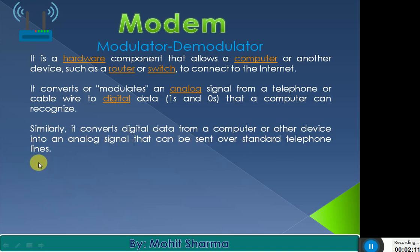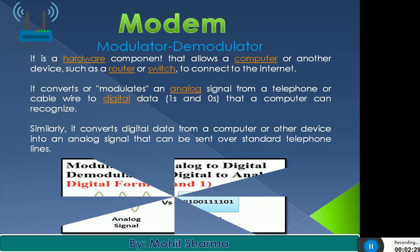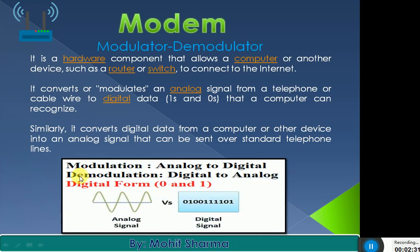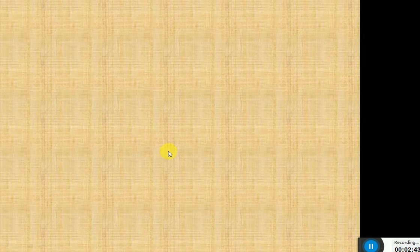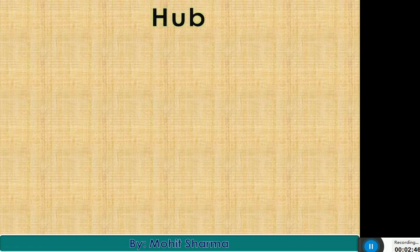Similarly, it converts digital data from a computer or other devices into an analog signal that can be sent over standard telephone lines. This reverse process is called demodulation, in which the digital signal is converted back into an analog signal for transmission to other devices. So modulation means analog to digital conversion, and demodulation means digital to analog conversion.